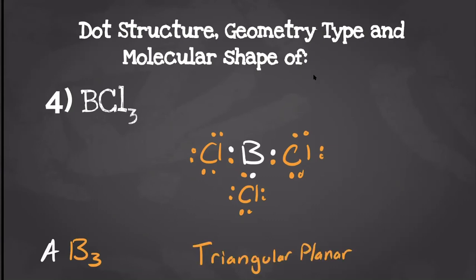Now when we look at the dipole moment, looking at our dot structure might not be very helpful. But if we draw its shape, we see that the chlorine is going to pull evenly in all directions. Even though they are diagonal to each other, each chlorine is going to be pulling equally left and right, and what's left when they're pulling up is going to be cancelled out by the chlorine on the bottom. So we're going to end up with a non-polar molecule.